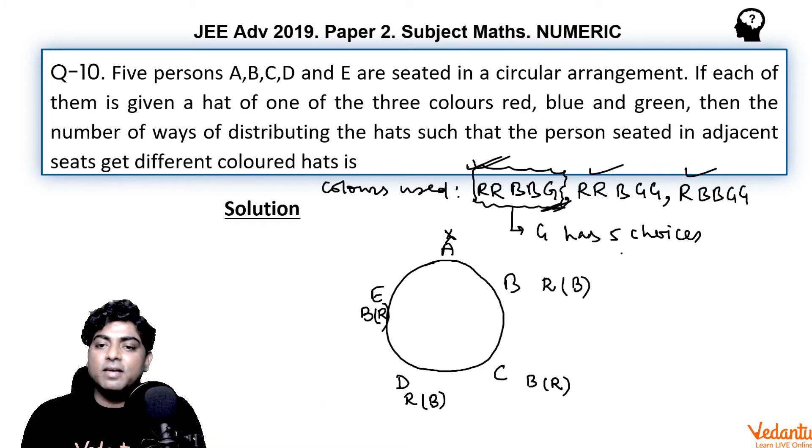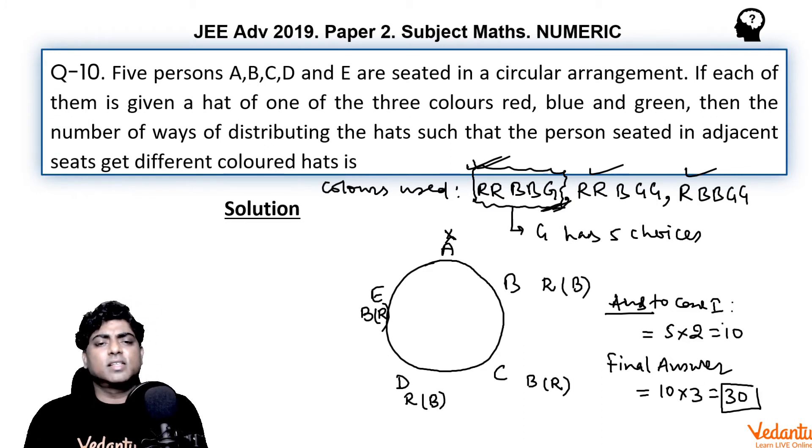So either red blue red blue, or blue red blue red. So the final answer to case one is 5 times 2, that is 10. And how many total such cases were there? Three cases. So the final answer to the question would be 10 times 3, that is 30.